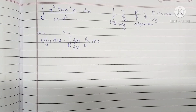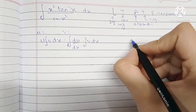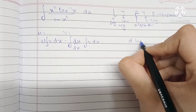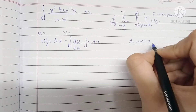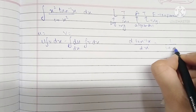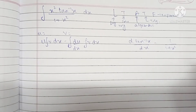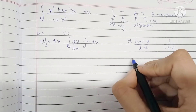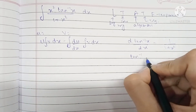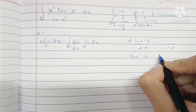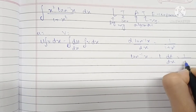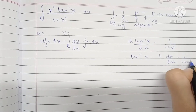We know that the differentiation of tan⁻¹(x) with respect to x is 1/(1 + x²). So if I keep tan⁻¹(x) as t, then dt/dx becomes 1/(1 + x²).